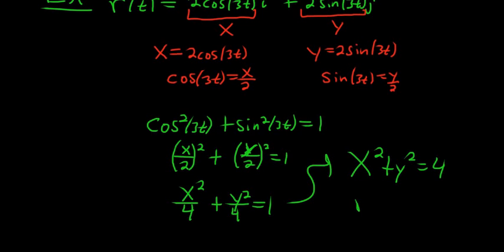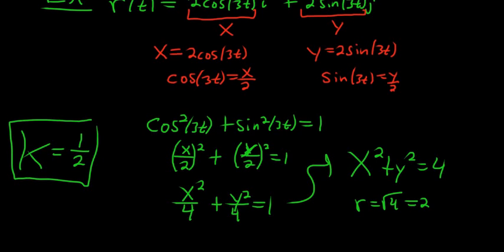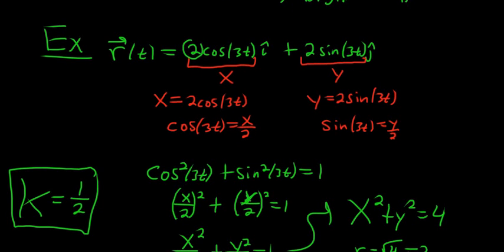This is a circle centered at the origin with radius 2. So the radius here is 2, and so the curvature would simply be 1 over 2. I kind of rushed through that because you can just look at this and you know it's a circle. So if I put a 5 here and a 5 here, it's a circle of radius 5. If I put a 7 there and a 7 there, it's a circle of radius 7. And then in that case, the curvature would be 1 over 7. So that's it.